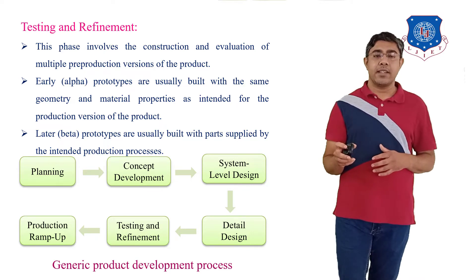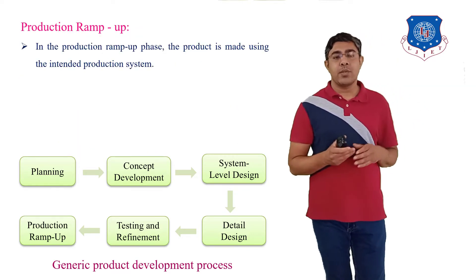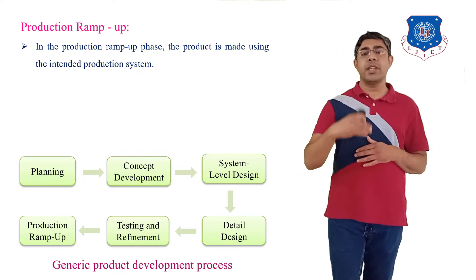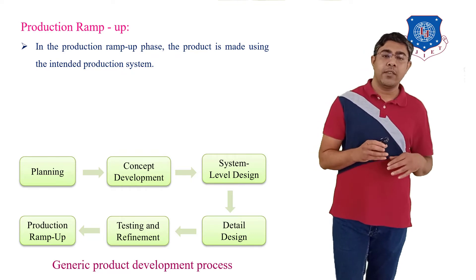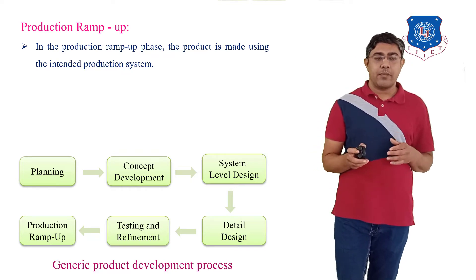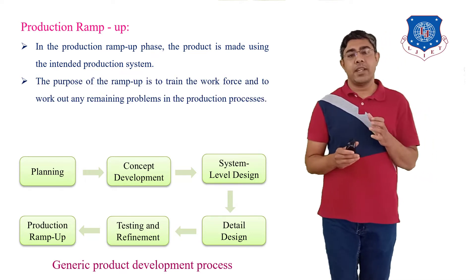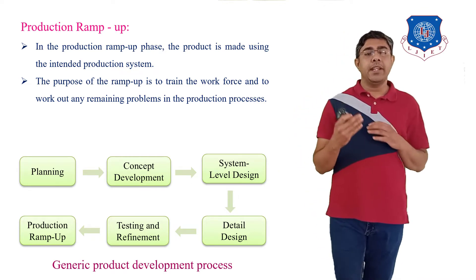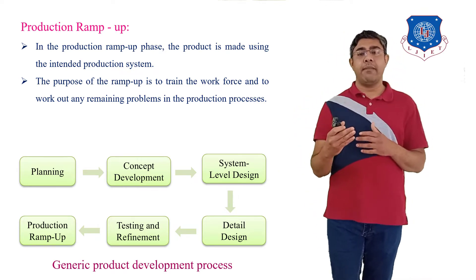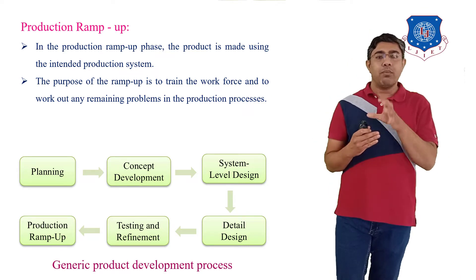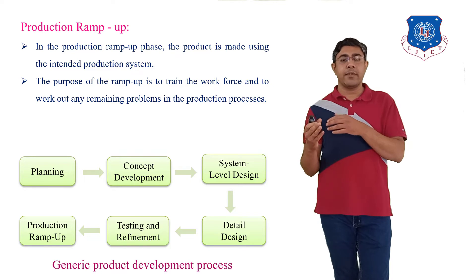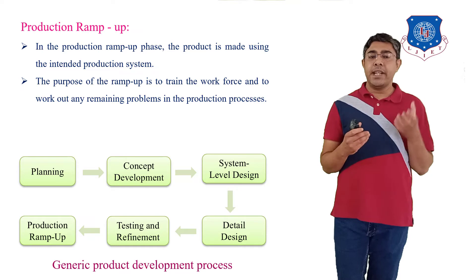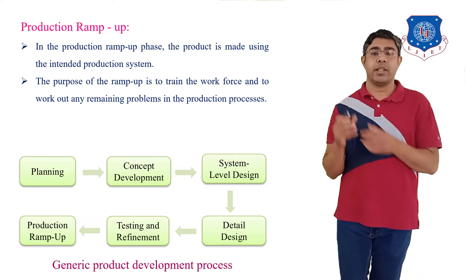The last step is Production Ramp Up. In production ramp up, the product is made using the intended production system. The purpose of this ramp up is to train the workforce and work out any remaining problems in the production process before going to full production of the actual product.